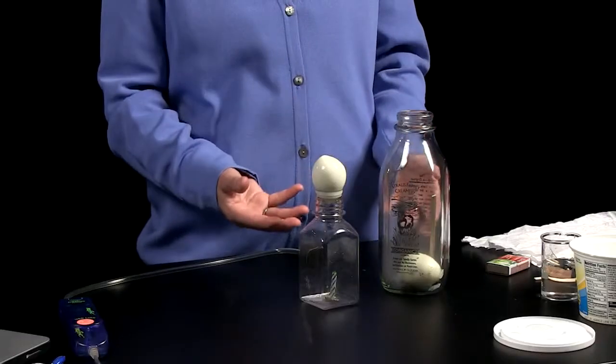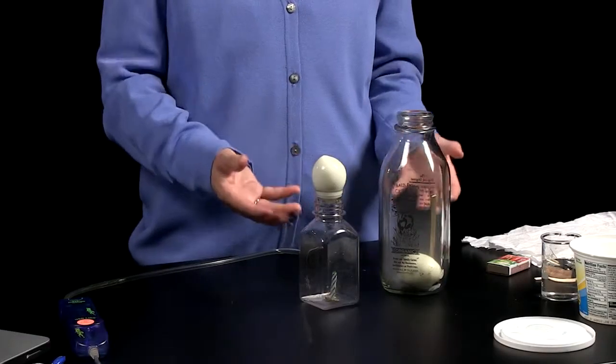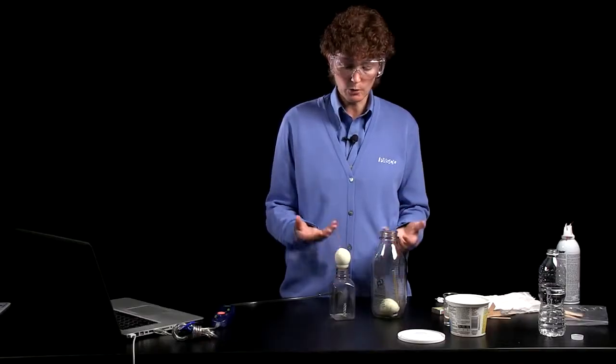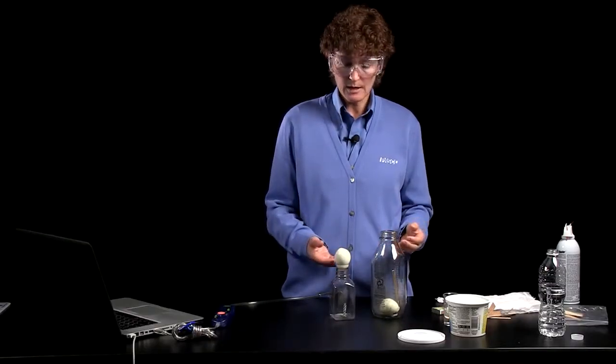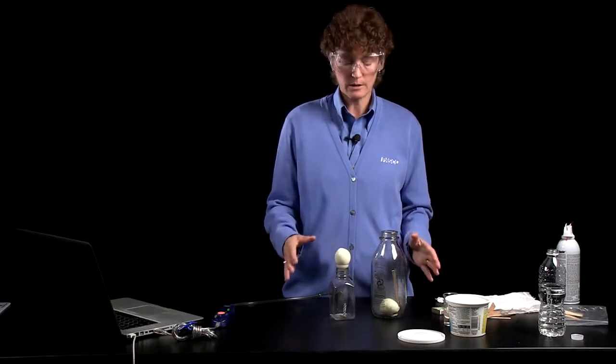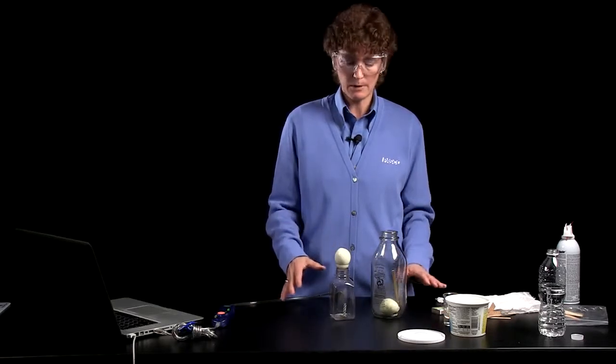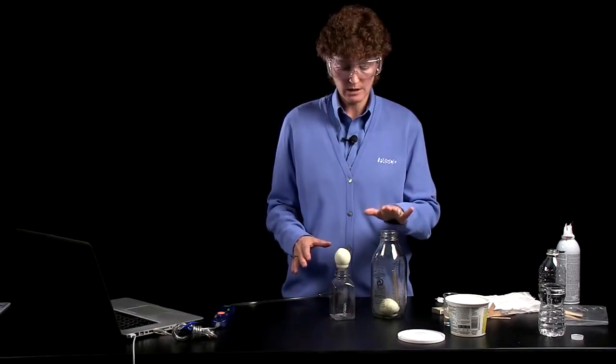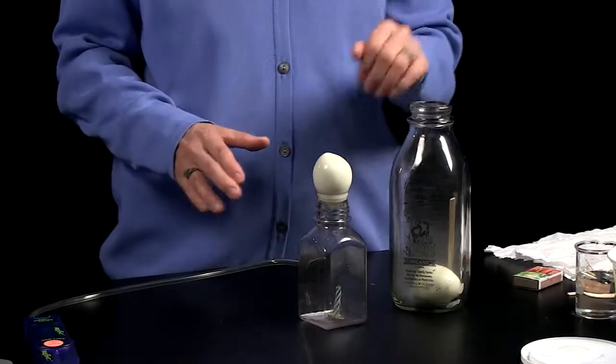And so inside the bottle, there's a smaller force, less pressure, lower force per surface area. If there's a difference in pressure, then there's a difference in forces. The imbalanced force is what eventually causes the egg to get forced into the bottle.